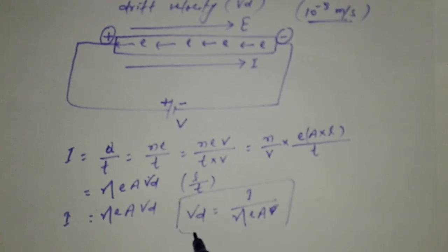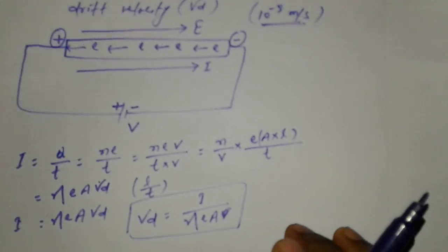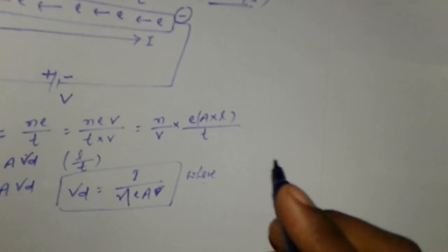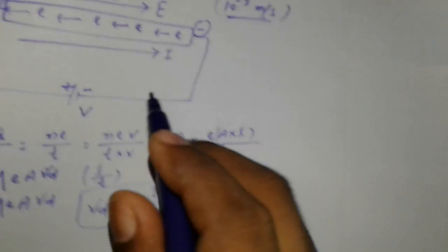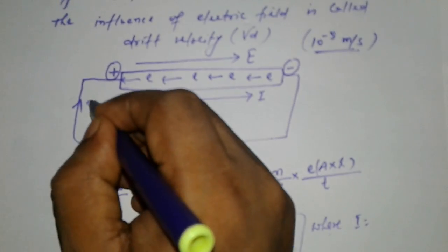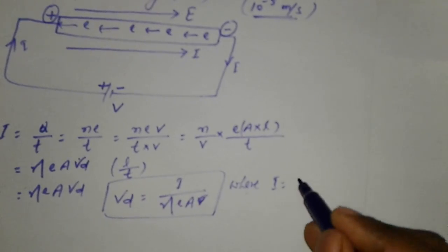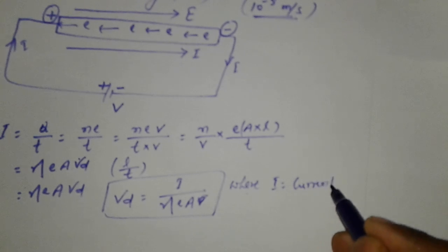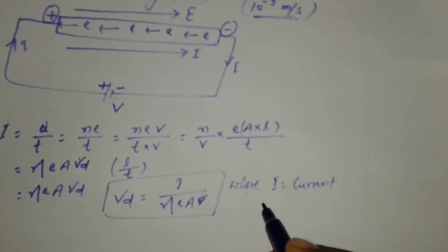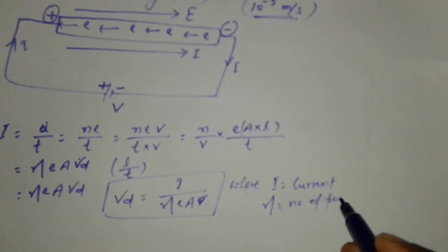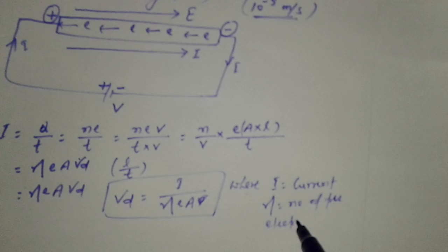Vd is equal to I by eta e A, where I is the current in the circuit, electric current in the circuit. Eta is number of free electrons per unit volume.